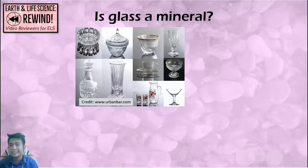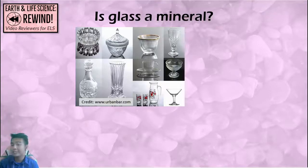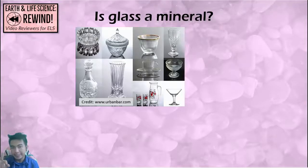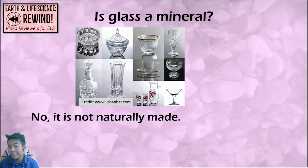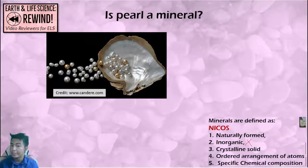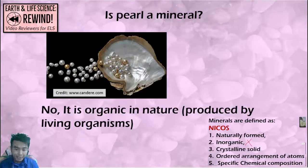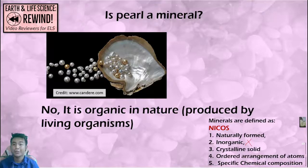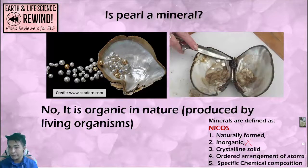Let's try answering: is glass a mineral? Does it violate one of the five characteristics — NICOS: naturally occurring, inorganic, crystalline, ordered arrangement, and specific composition? Glass is not a mineral because it is not naturally formed; glass is man-made. How about pearl? Pearl is not a mineral because it is organic. Minerals should be inorganic, meaning not related to any living organisms. Pearl is produced by living organisms.